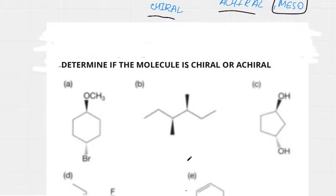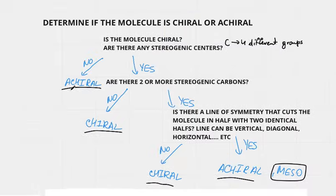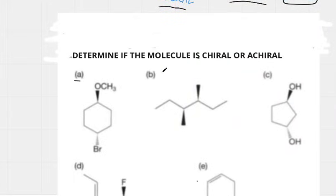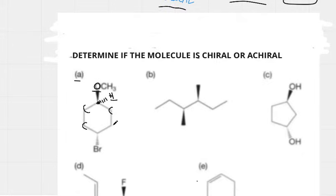Looking at molecule A, the first question is: are there any stereogenic centers? This carbon is connected to three visible groups, meaning it's also connected to a hydrogen. So it has oxygen, hydrogen, and two carbons. Going left and right from that carbon, we see carbon on both sides — no difference there — and they connect to the same carbon, so there is no difference in the groups. Therefore, this carbon is not stereogenic.